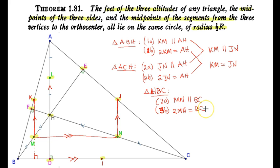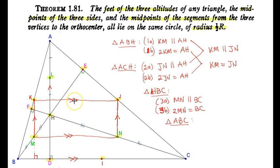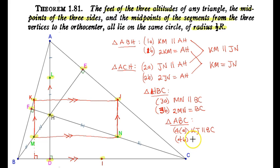Now look at triangle ABC. K is the midpoint of AB and J is the midpoint of AC, so KJ is parallel to BC — which is already parallel to MN. Call it 4A. And since KJ is the midline of triangle ABC, 2·KJ = BC — call it 4B.